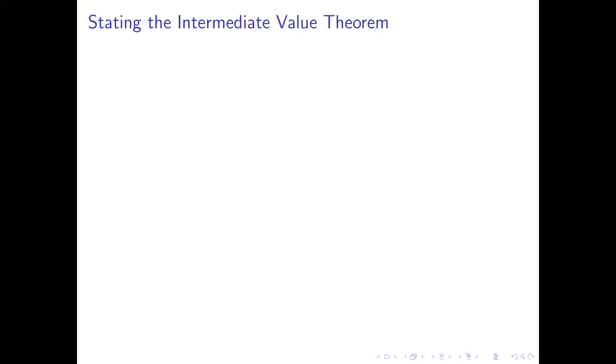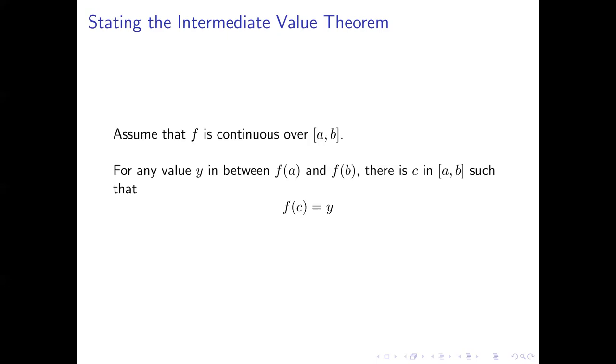Let's state the intermediate value theorem. This can look a little complicated, but the idea is just a generalization of what we already saw. Let's say we have a function that's continuous over an interval from a to b. The intermediate value theorem says that for any number you choose, any value y between f(a) and f(b), there's got to be some value c in between a and b so that f(c) is equal to y.